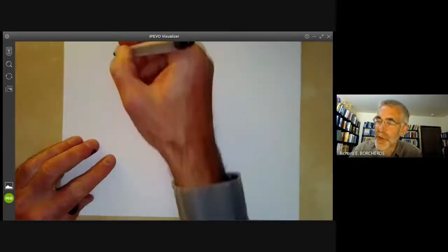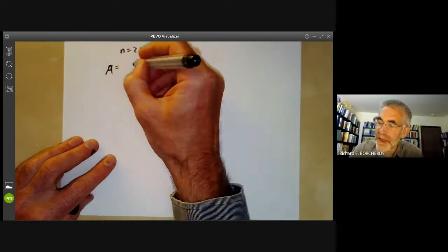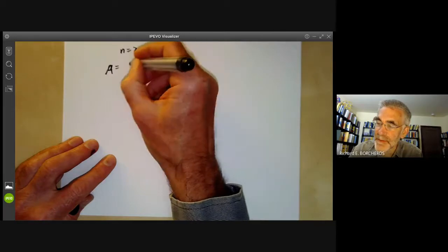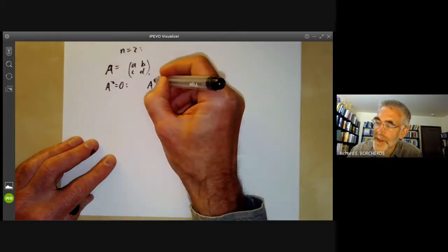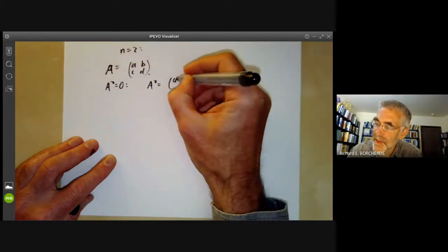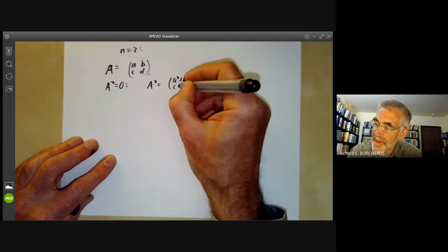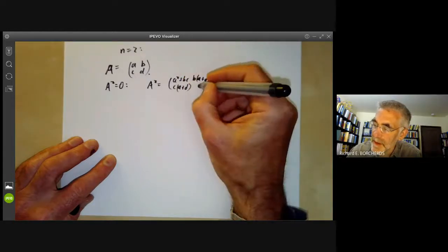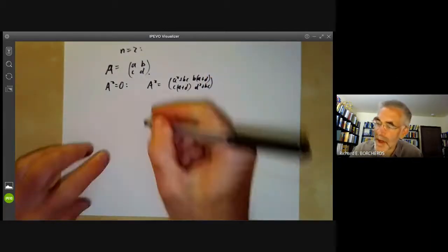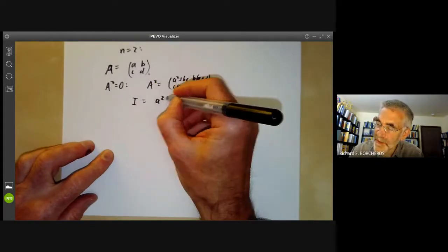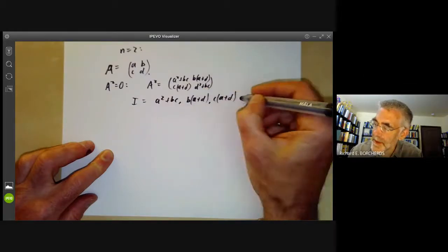So let's take n equals 2 and just see what happens. So here A, the matrix A is going to have four coefficients A, B, C, D. And A^2 equals zero. Well, A^2 is just the matrix (A^2 + BC, BA + BD; CA + DC, D^2 + BC). So the ideal i is equal to (A^2 + BC, BA + BD, CA + DC, D^2 + BC).